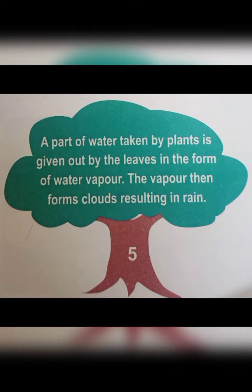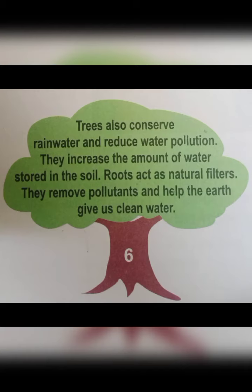The water received by the plants is given out by the leaves in the form of water vapor. These vapors form clouds and result in rain. Trees also help to maintain the ground water table and help the earth to give clean water.